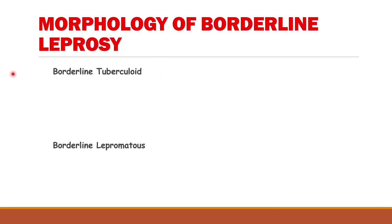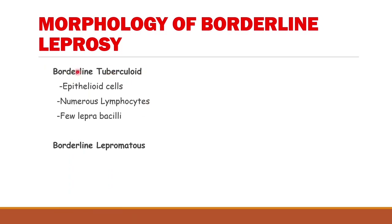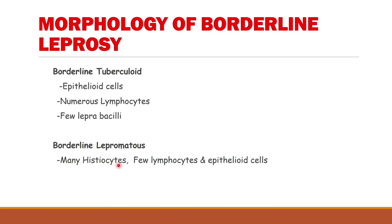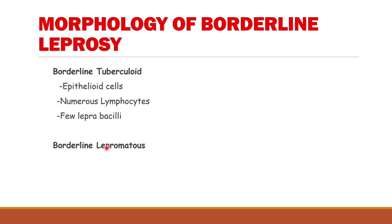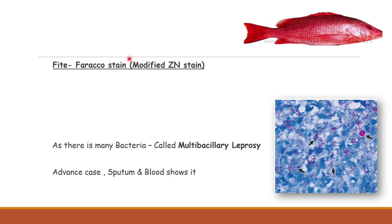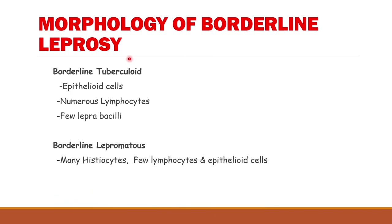In borderline tuberculoid leprosy, features are borderline — no full-fledged granuloma is seen. In borderline lepromatous leprosy, only histiocytes along with a few lymphocytes are seen. For examination purposes, the key focus should be on the morphology of lepromatous and tuberculoid leprosy.